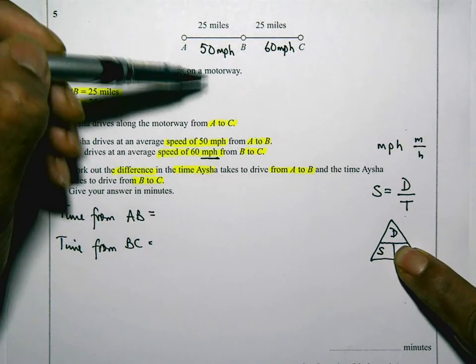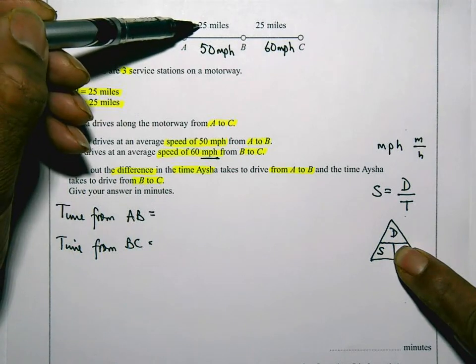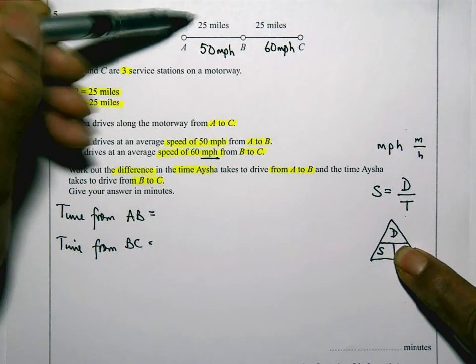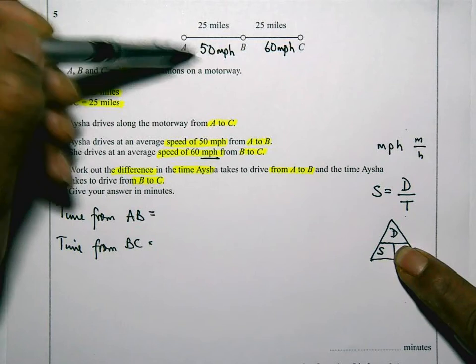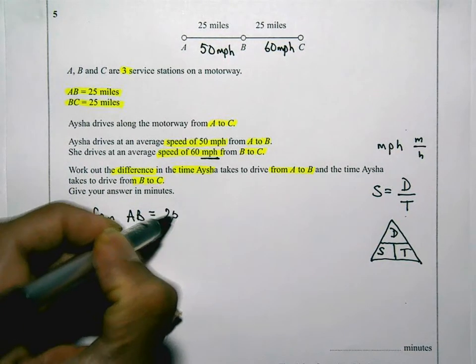So to get from A to B, the distance is 25 miles and the speed is 50 miles per hour. So it's 25 divided by 50.